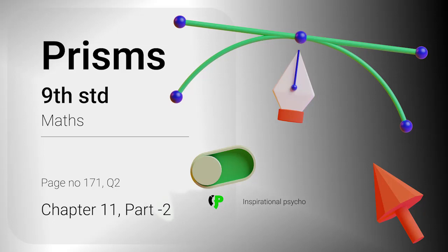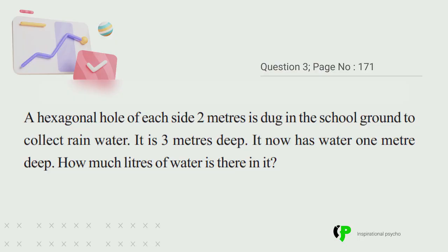Hi students, we are in the 11th chapter. We are going to do a second question. A hexagonal hole of each side 2 meters is dug in the school ground to collect rainwater.